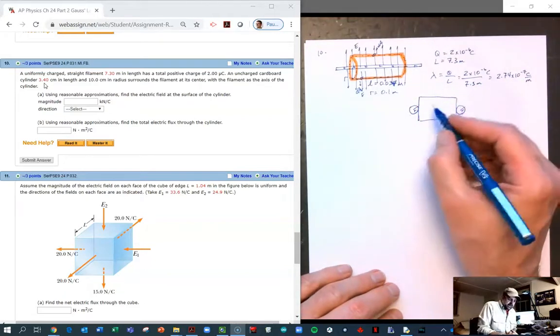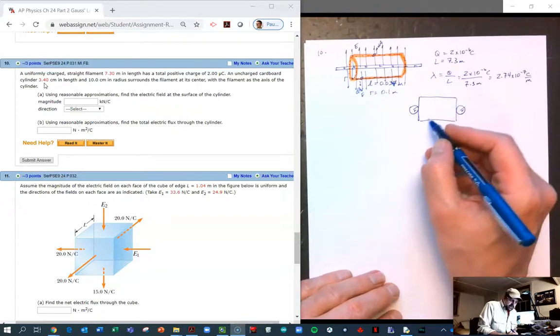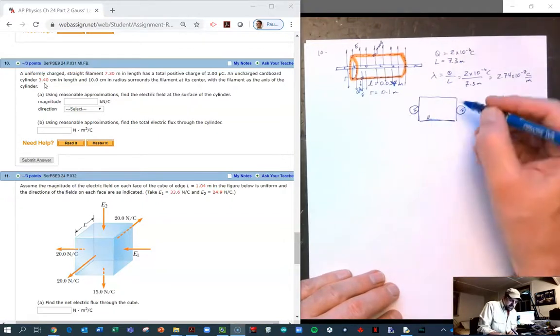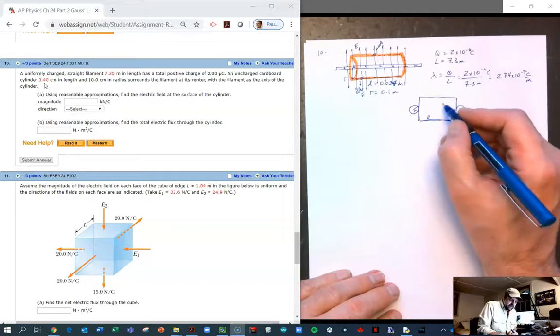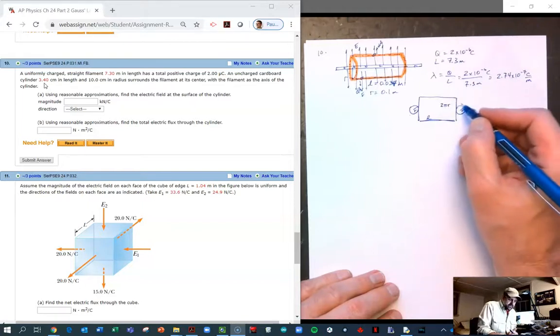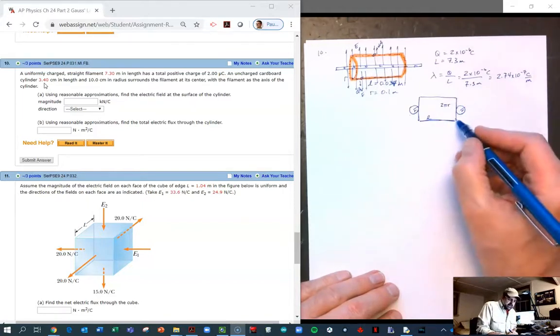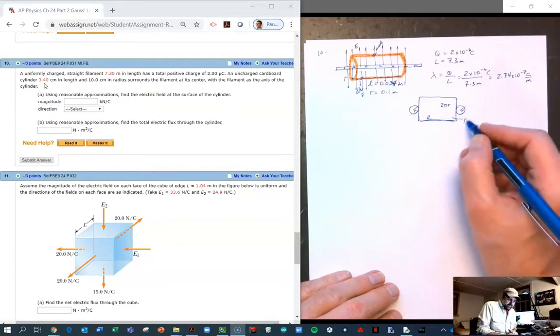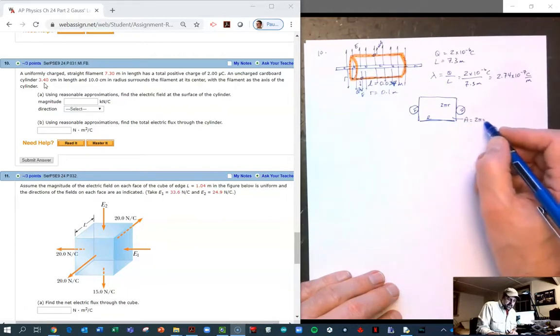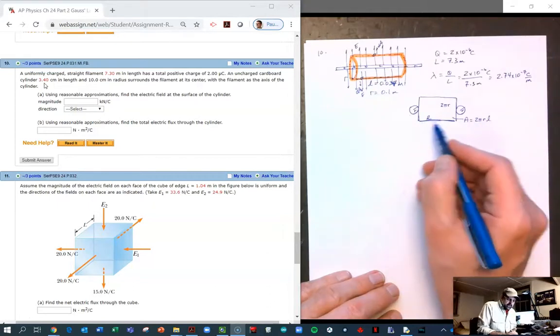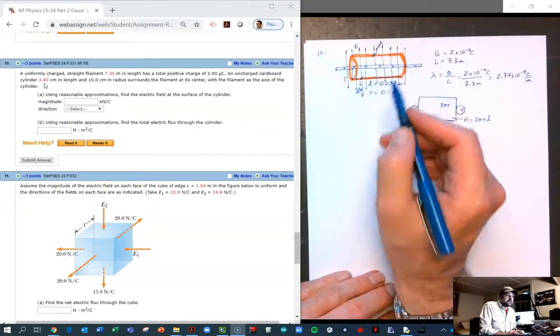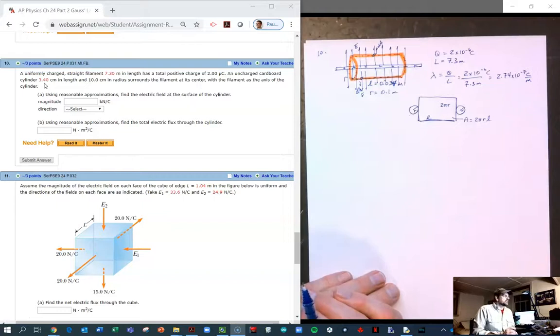We know this length is l, and this is 2πr, the circumference of our end. So the area of that middle part is 2πrl, where l is the length of our Gaussian or our cardboard tube.